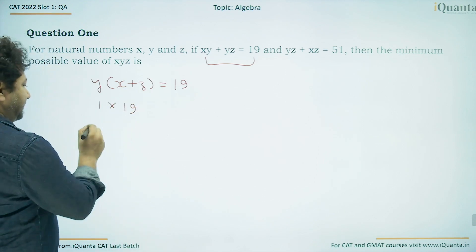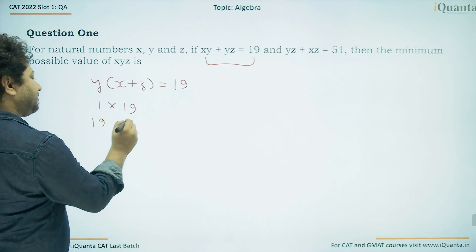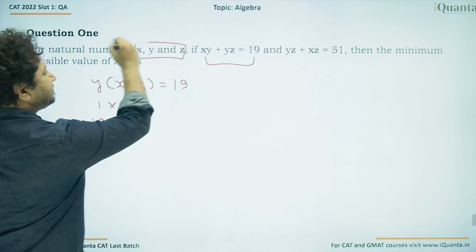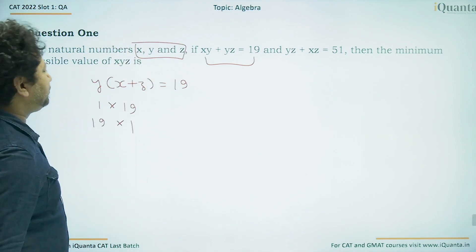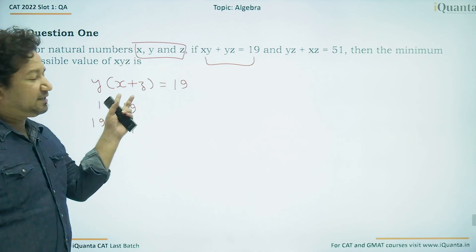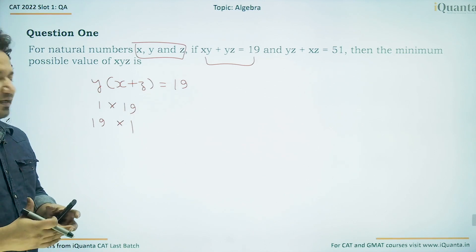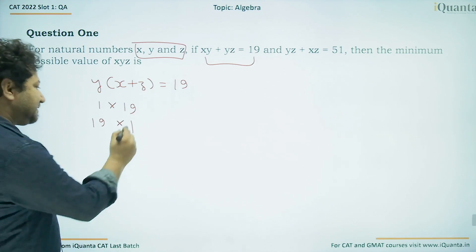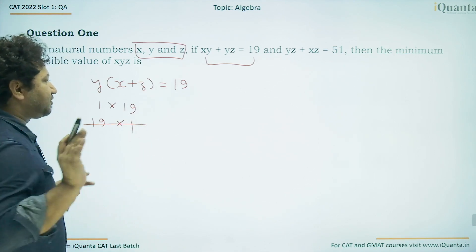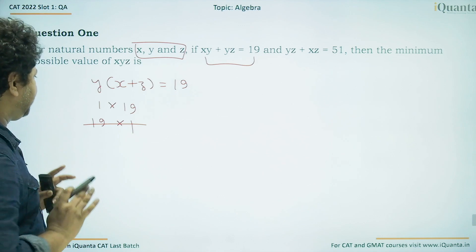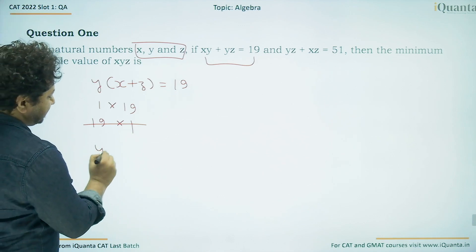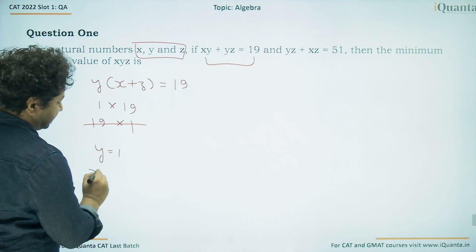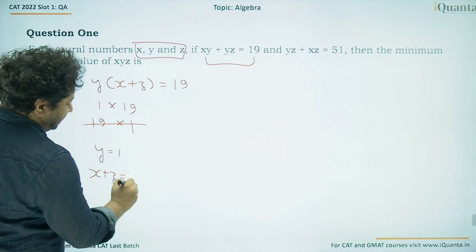If I write 19 × 1, this will not be possible. Because these numbers are natural numbers, the value of x and z will be at least 1 each, which means their sum will be at least 2. That is why this case is automatically eliminated. So we have y = 1 and x + z = 19.